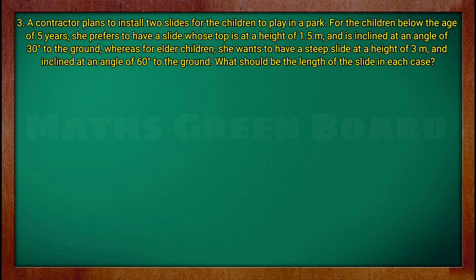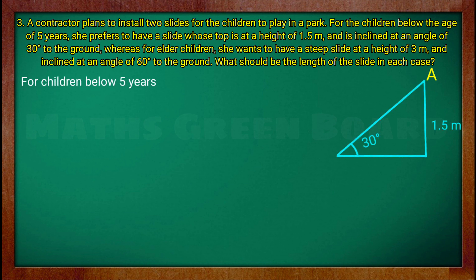First of all, we will solve what will be the length of the slide for children below 5 years. We will write: for children below 5 years. What is given here? We have the perpendicular given as 1.5 meters, and we need to find the hypotenuse.